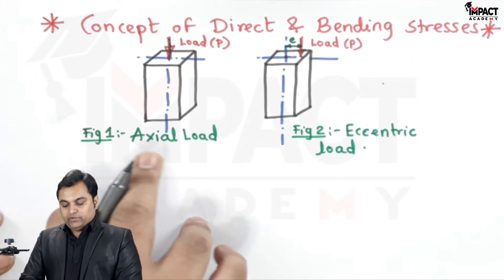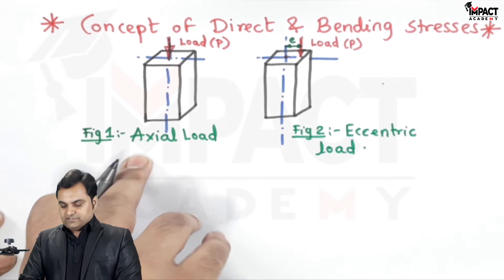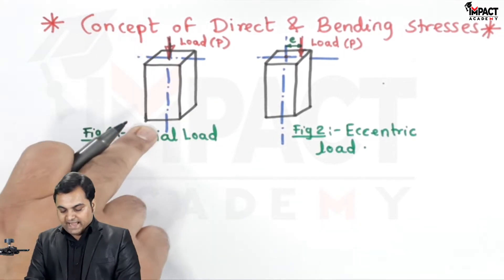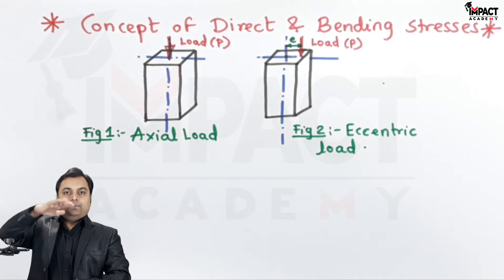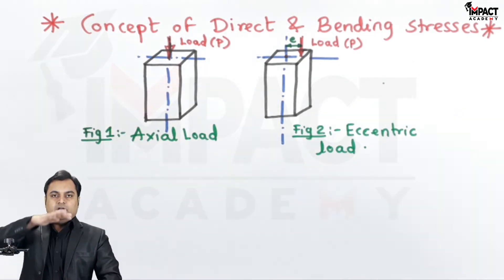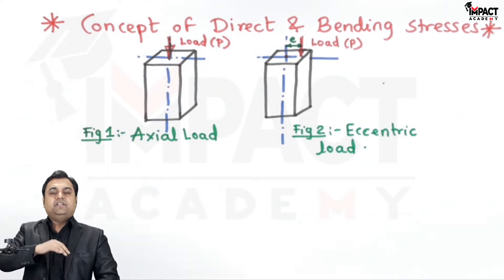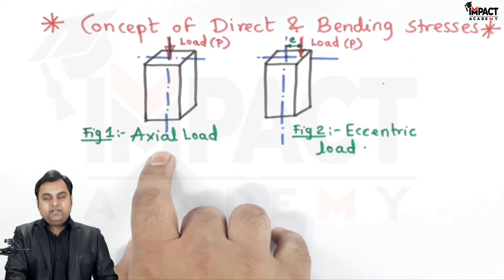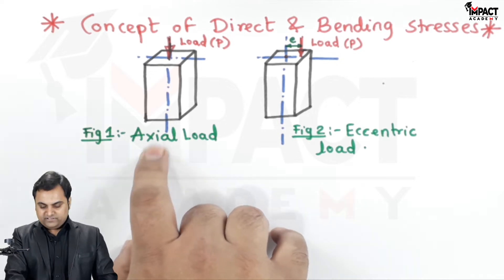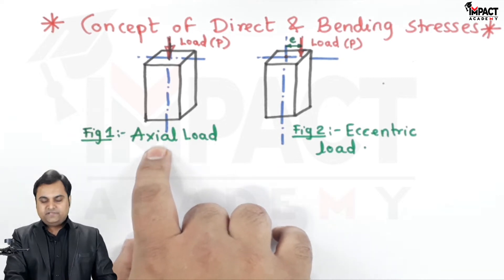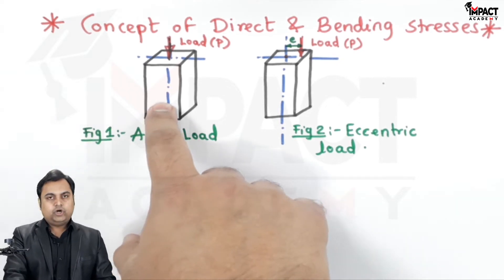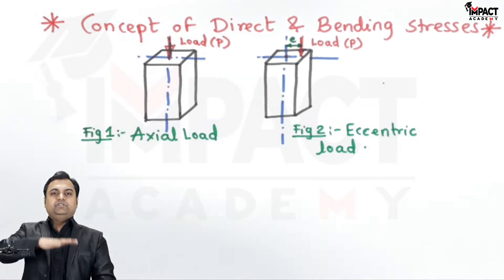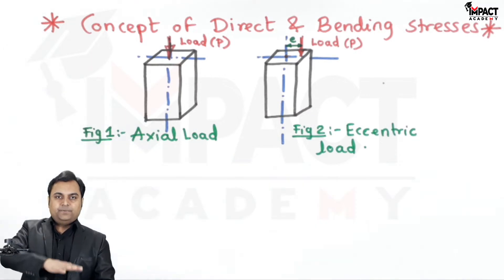In the first case, because the load is axial — that is, it is compressing the column along the axis — there will be only compression inside this column. Because of the axial load, there is only compression.